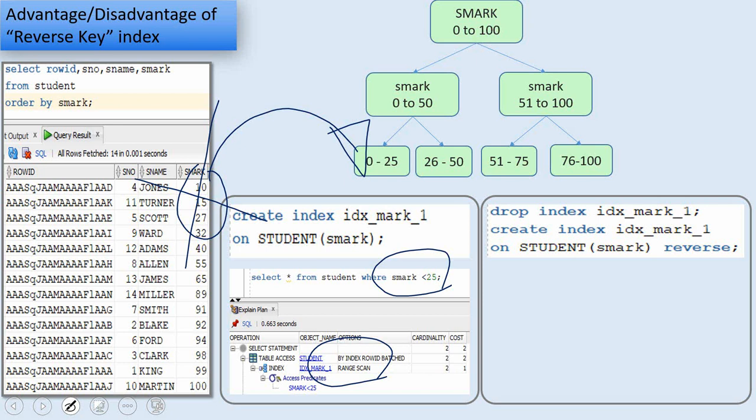Because it is not sorted, it will not be able to do the range scan. Whenever we do a query something like select star from student where student mark less than 25 on top of a reverse key index,